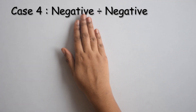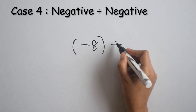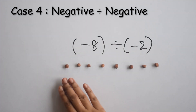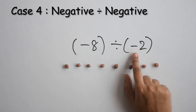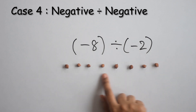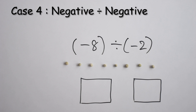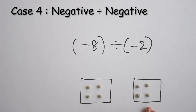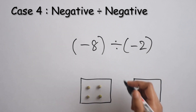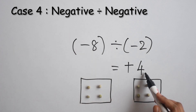Case 4 is when we have a negative integer divided by a negative integer. For example, if we have negative 8 divided by negative 2. This is negative 8 divided into two equal groups, but since 2 here has a negative sign, we have to change the color. So, we will replace the 8 chickpeas with 8 green peas. How many do we have in each of the two groups? We have 4 in each group, and since they are green peas, the symbol is positive. So, negative 8 divided by negative 2 is equal to positive 4.